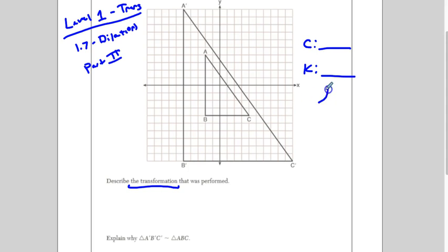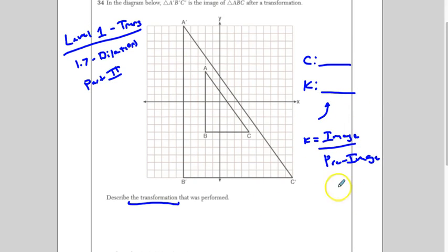You just need the image length over the pre-image length. All right? So, we just have to find those two lengths. Now, you can pick any two corresponding sides, and that will give you the scale factor. So, I'm going to pick these sides over here. So, B prime, C prime, that's my image, and B, C is my pre-image.